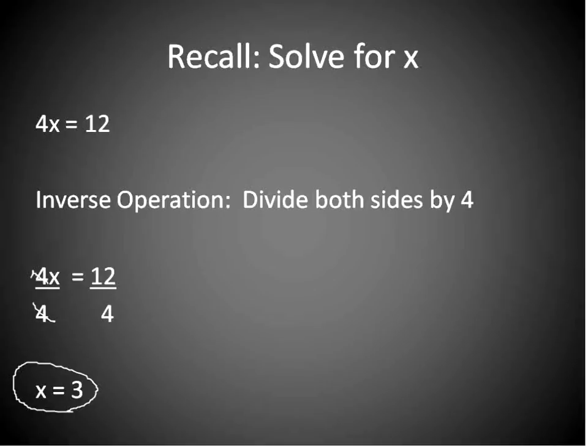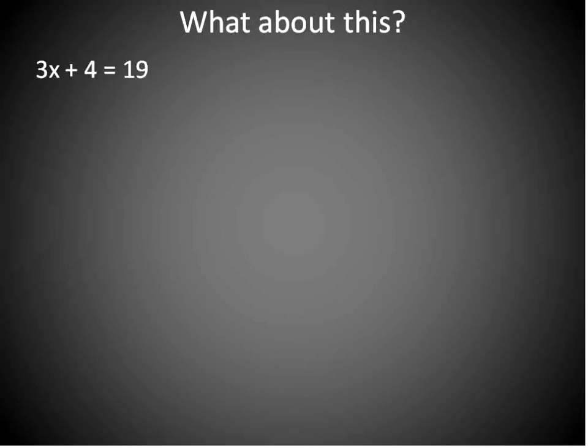And if you need a review on that, there are one-step transformations, there's a video on those. But what we're going to do today is what happens when you get a little bit bigger of an equation like this? 3x + 4 = 19.